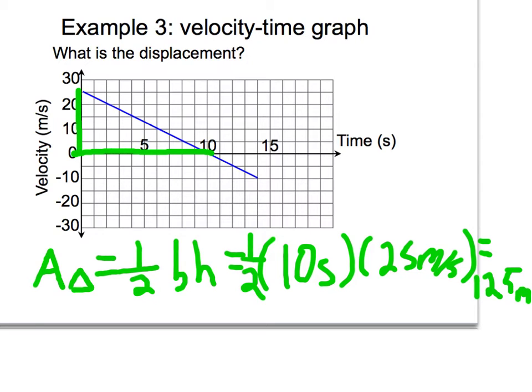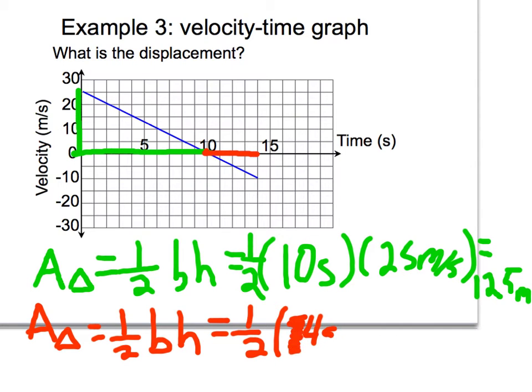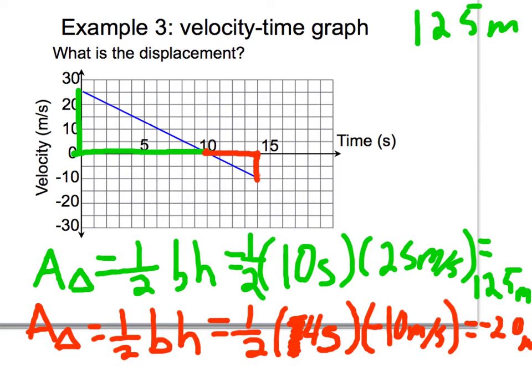Now I'm going to do the other triangle in red. Area for a triangle, one half base times height. The base of our triangle goes from ten to fourteen seconds. So that total should be, sorry, just four seconds. Four seconds. And the height of our triangle goes from zero to negative ten. So our height is going to be negative ten meters per second. So I've got one half times four is two. Times negative ten is negative twenty. And I get equals negative twenty meters. Now I put those two together. One hundred and twenty-five meters. Negative twenty meters. One oh five meters.